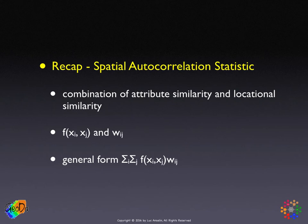The statistic takes on a general form of a double sum over all origins and all destinations — a product of two elements: a function f(xi, xj) and the weights matrix element w(i,j). Since the weights matrix is zero when i and j are not neighbors, that part of the product zeroes out, so f(xi, xj) is only counted for i's and j's that are actually neighbors.